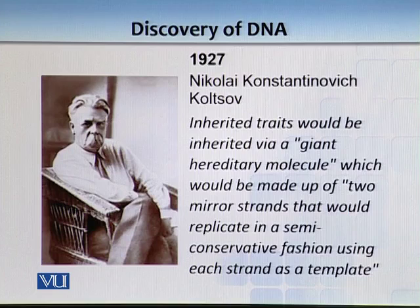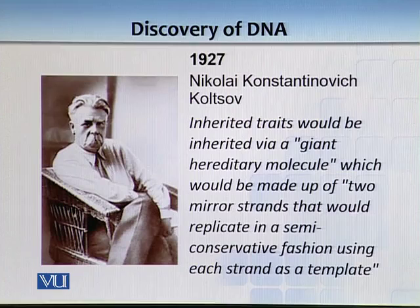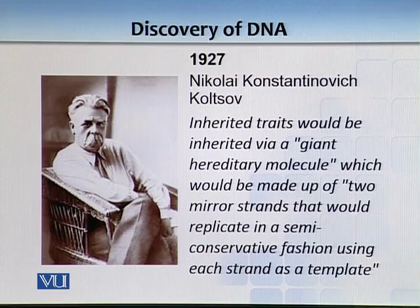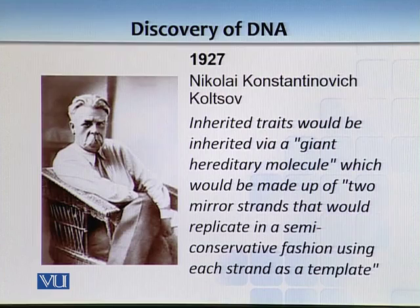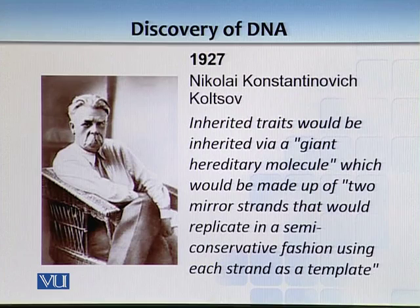In 1927, a Russian scientist, Nikolai Konstantinovich Koltsov, said something very interesting: inherited traits would be inherited via a giant hereditary molecule made up of two mirror strands that would replicate in a semi-conservative fashion using each strand as a template. This is before we knew the structure of DNA. At that time, they only knew there were four bases and nucleic acid, but had no clue whether it was a hereditary molecule or not.